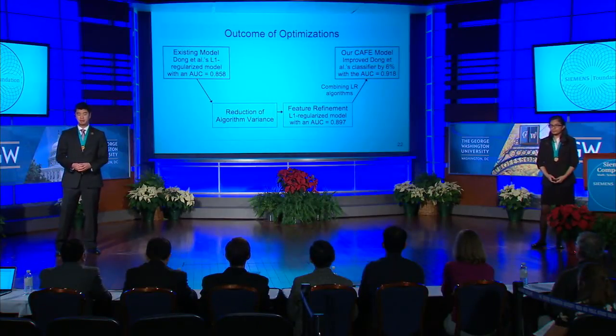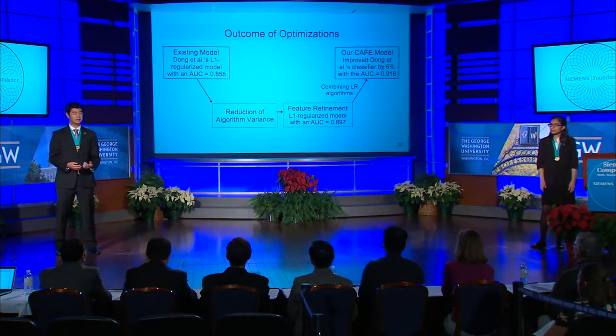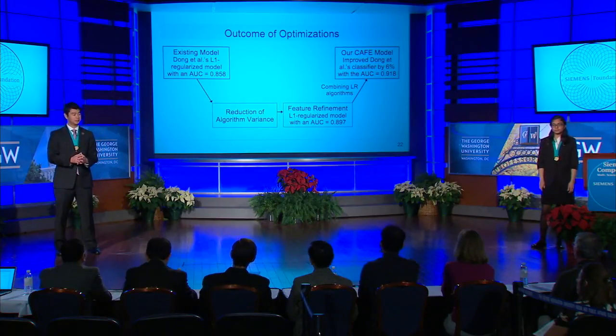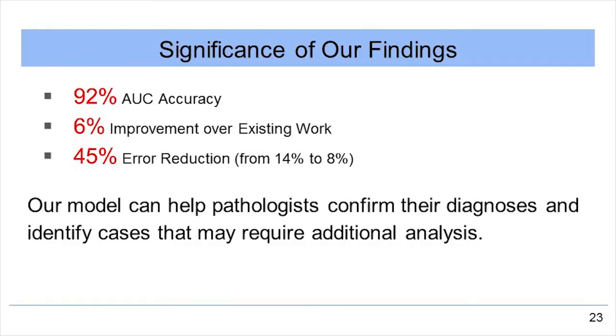To recap, we began with six existing machine learning algorithms, reduced the algorithm variance, extracted active features, and combined the top performing algorithms to result in our final CAFE model, which had a 6% improvement over previous work. This is especially significant considering that Dong and others already achieved a very impressive AUC of 0.86. Our 92% AUC accuracy, or 6% improvement, translates to a 45% reduction in error.